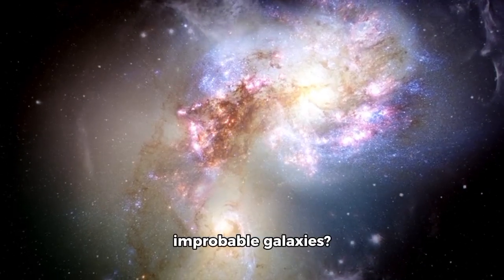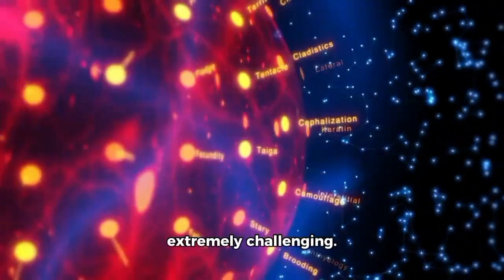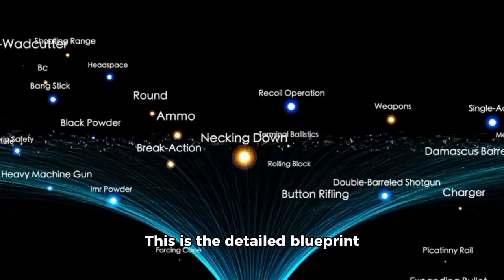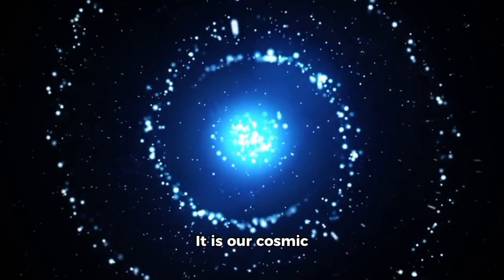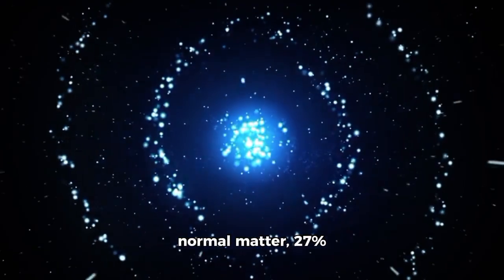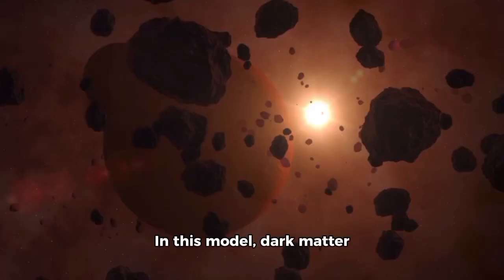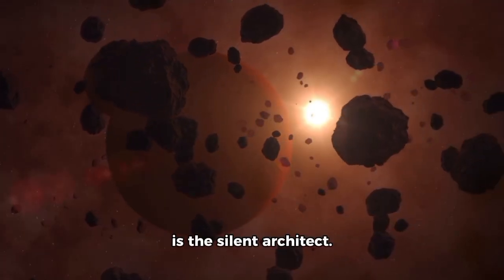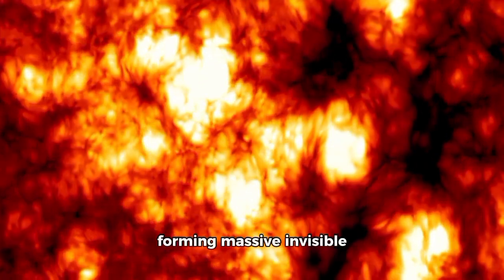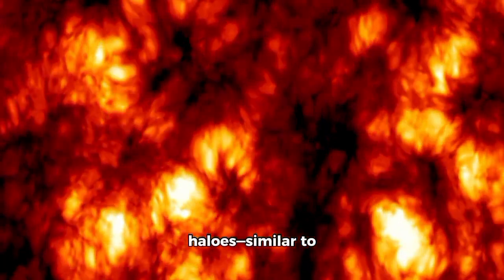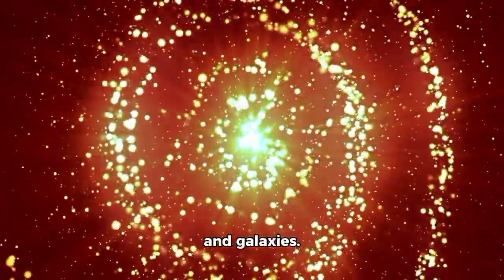What are these improbable galaxies challenging? Our standard model of cosmology, known as Lambda-CDM, is extremely challenging. This is the detailed blueprint for how the Universe developed following the Big Bang. It is our cosmic recipe: about 5% normal matter, 27% mysterious dark matter, and 68% dark energy. In this model, dark matter is the silent architect. Because it is cold, it clumps together easily, forming massive invisible halos. These halos act as seeds, pulling in gas to make the first stars and galaxies.